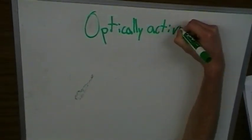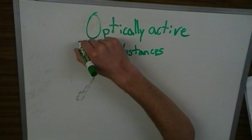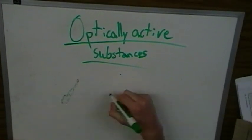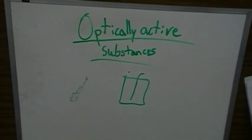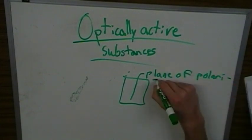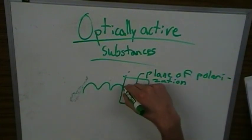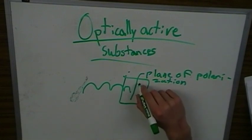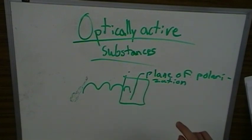And finally, optically active substances. An optically active substance is a substance which will rotate the plane of the light passing through it. So here we have a wave of light and it's going to pass through that plane of polarization.